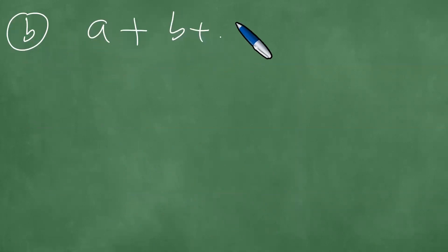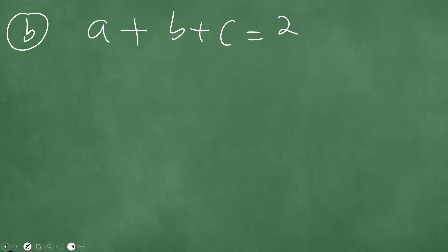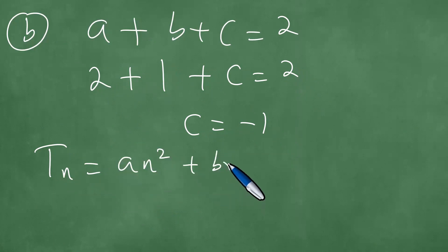We have a plus b plus c equals the first term of the quadratic. So a plus b plus c equals 2. So Tn equals a, and a is exactly the same as 2n squared, b is 1, c is minus 1.